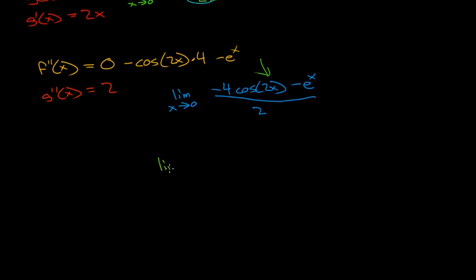Then we get the limit as x approaches 0 of negative 4, because cos(2x) is cos(0), that's going to be 1, negative 4 times 1, minus e to the x is going to be e to the 0, and anything to the power of 0 is going to be 1. So it's negative 4 minus 1 over 2, and this is equal to negative 5 over 2, and that is the limit of that function.